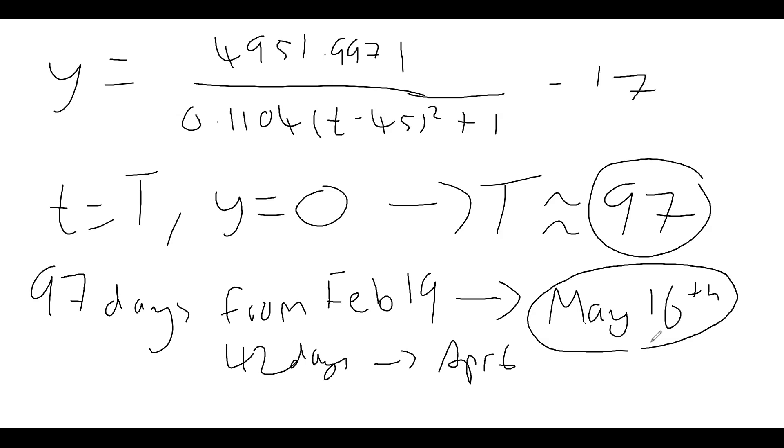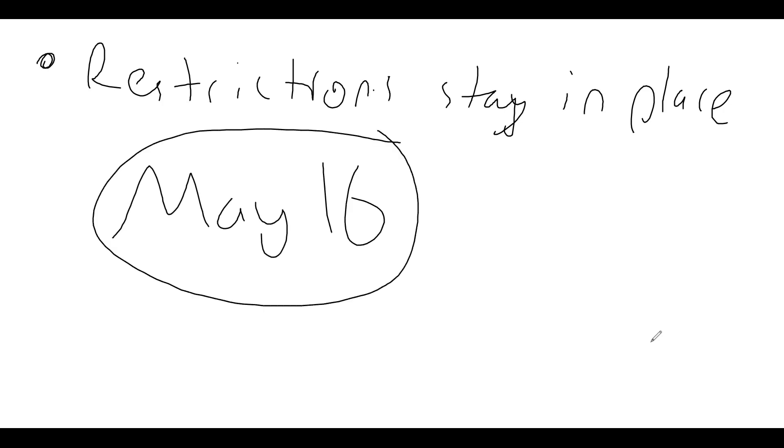Now we're assuming the current restrictions stay in place or tighten. Restrictions stay in place. So the current restrictions the government has imposed to help keep us all safe. If restrictions stay in place, all active cases should be close to zero in about 41 days. So May 16th. So if you're watching, you've heard from me, around May 16th, number of active cases will be close to zero if all restrictions stay in place.